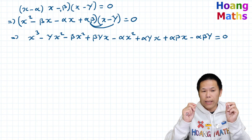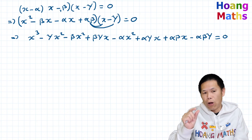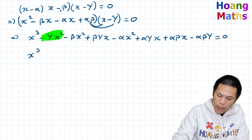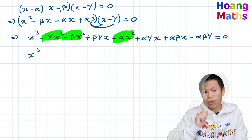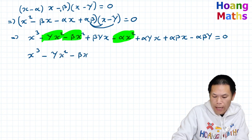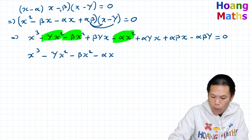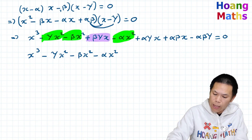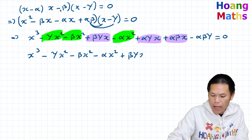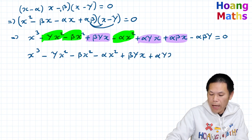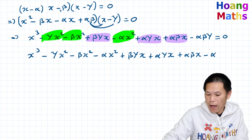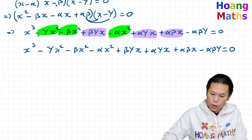Let me rewrite this, grouping by degree: x³, then the x² terms: −gamma·x² − beta·x² − alpha·x², then the x terms: +beta·gamma·x + alpha·gamma·x + alpha·beta·x, and the constant: −alpha·beta·gamma = 0.